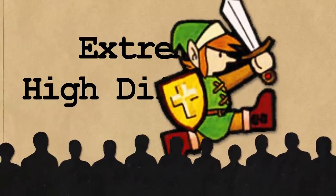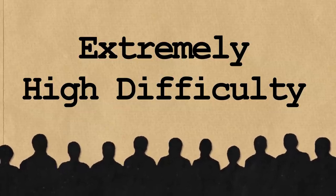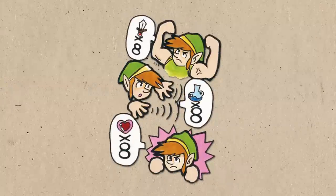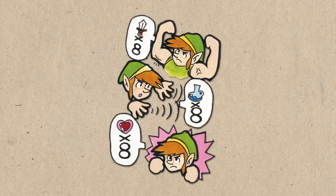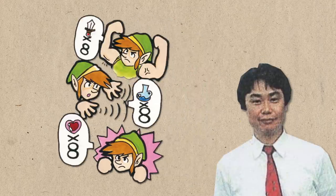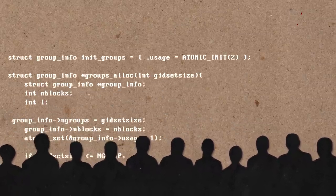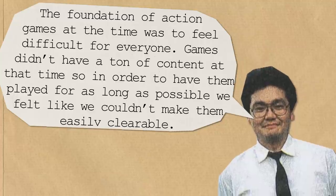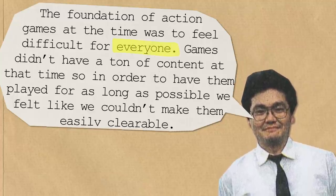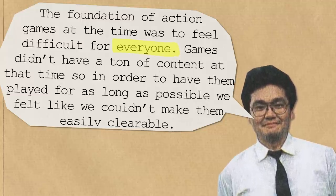One of the biggest complaints about the game was its extremely high difficulty. However, it wasn't always going to be this way. In the final game, the player can level up their magic, life and power 8 times. Originally though, Miyamoto wanted the max levels to be double that — 16. However, as development went on, the team decided to make it a little trickier. According to Sugiyama, the foundation of action games at the time was to feel difficult for everyone. Games didn't have a ton of content at that time, so in order to have them played for as long as possible, they felt like they couldn't make them easily clearable.